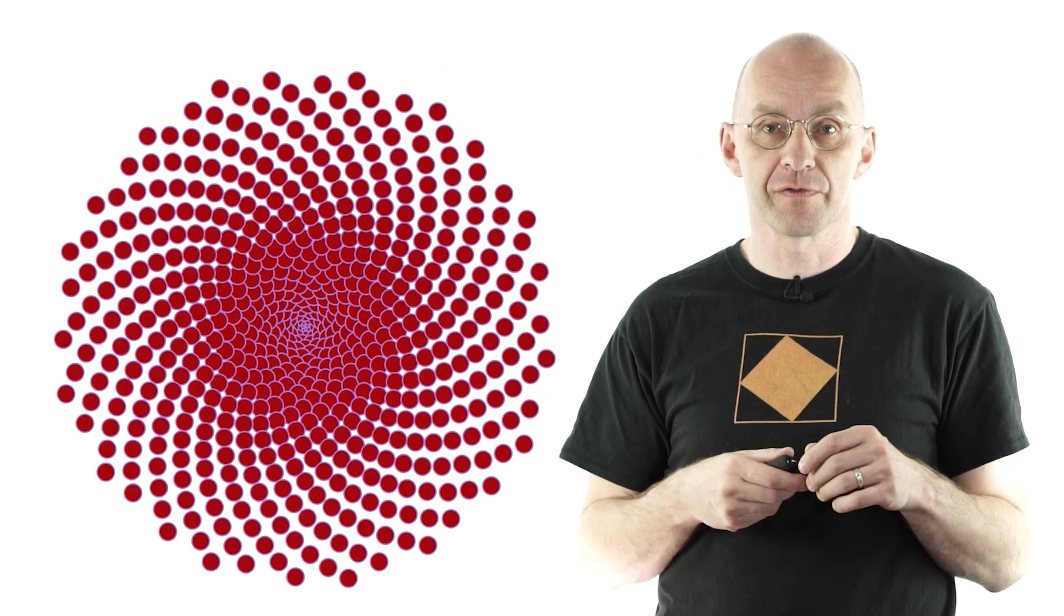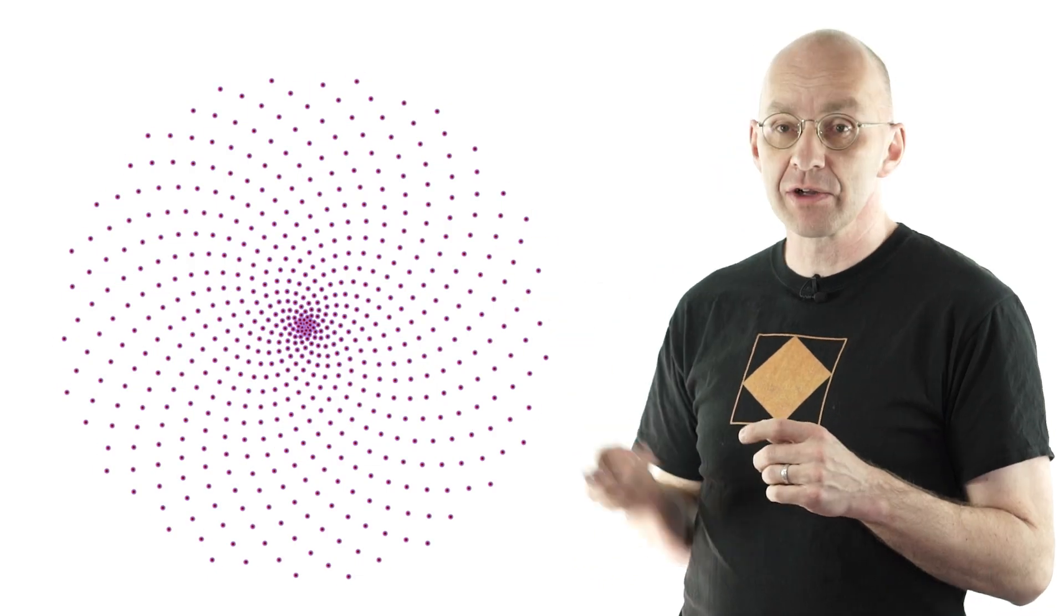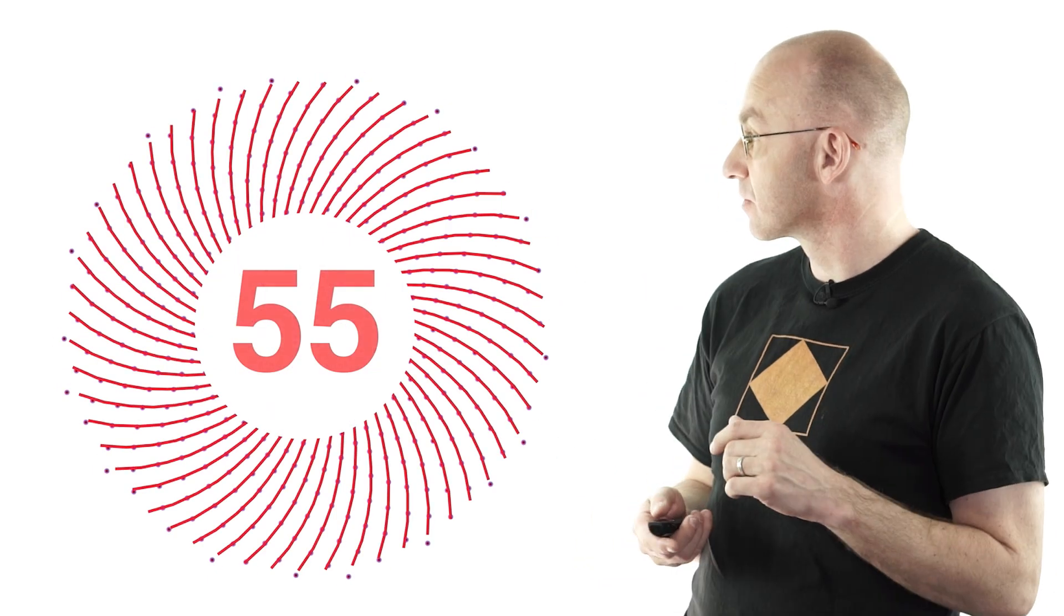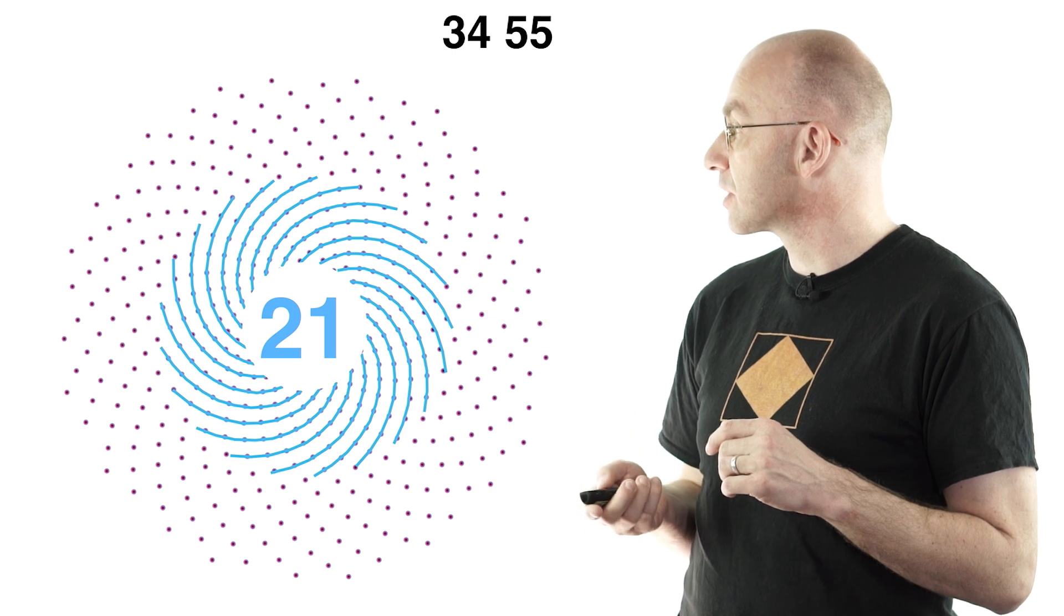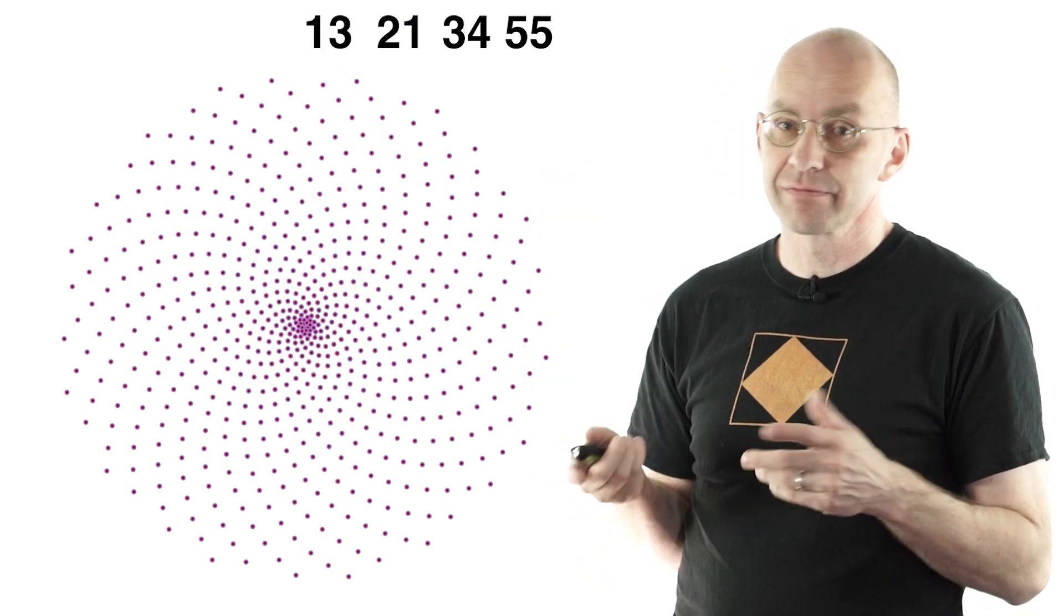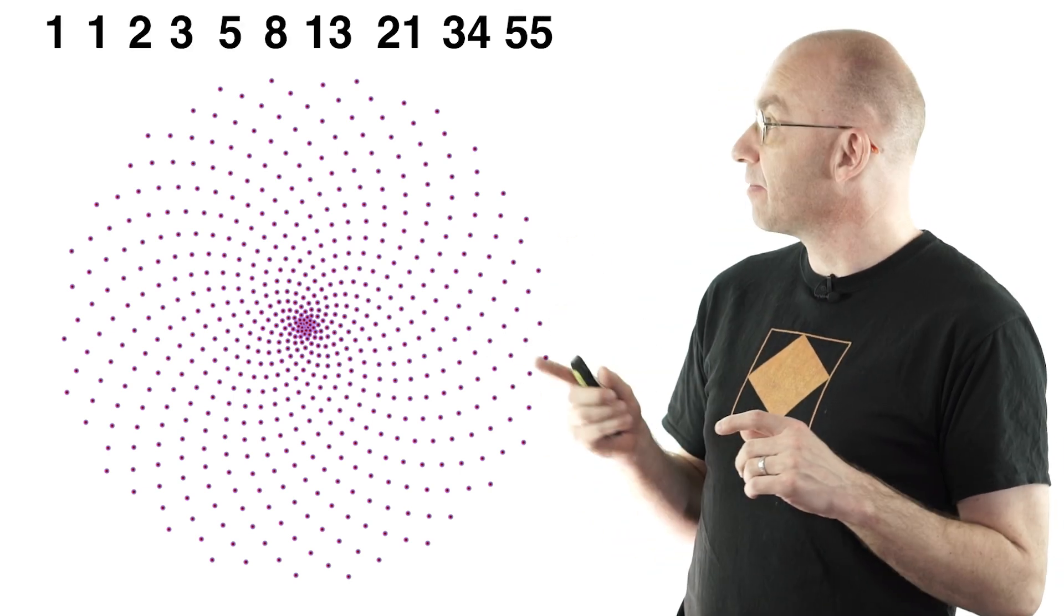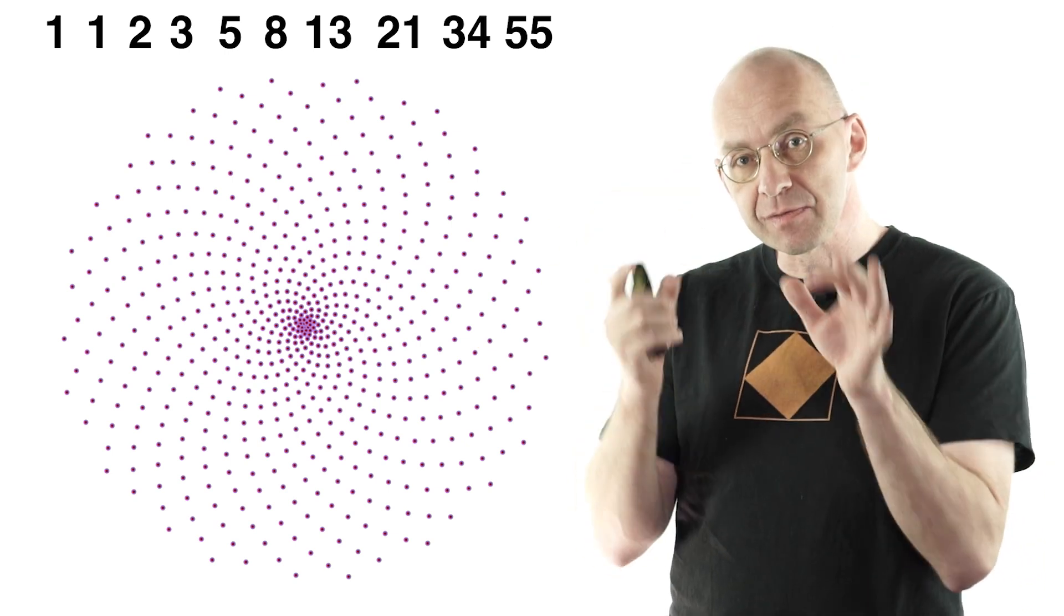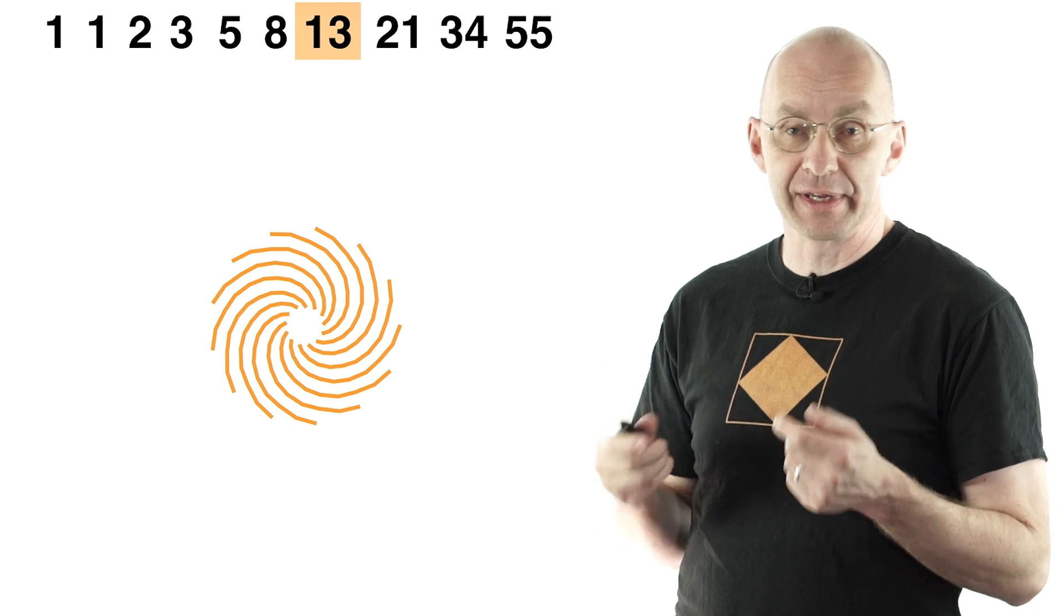So I'll focus on flower heads like this and let's just have a close look. What jumps out at you are of course the spirals. There's 55 going this way and 34 going the other way and there's 21 if you focus in on the middle and even further in there's 13. And of course Fibonacci numbers. Now before we move on I just want to emphasize that these different numbers are visible in different parts of the flower head. So the smaller the further in.